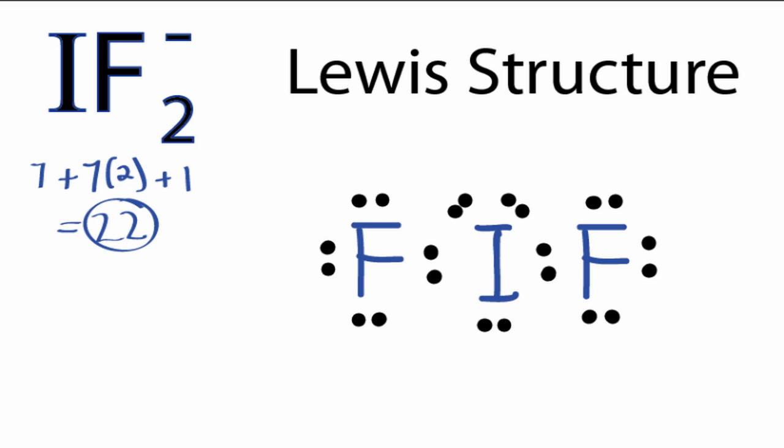So to show that IF2- is an ion, we do need to put brackets around the Lewis structure. Like that, and then put a negative sign out here to show that it's a negative ion.